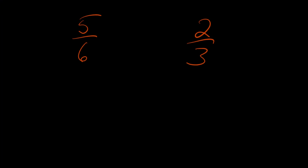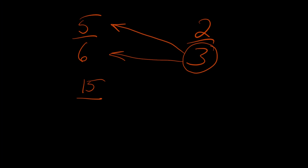All you have to do is look at one fraction and multiply both its numerator and its denominator by the denominator of the other fraction. So in this case, we're looking at five sixths, and we're just going to take that three — the denominator on the other side — and multiply it times both the top and the bottom. Three times five is 15, and three times six is 18.